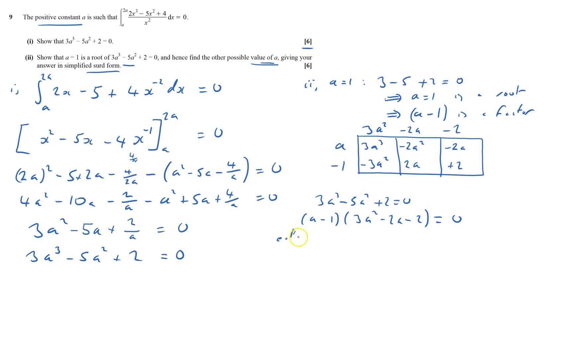So either a minus 1 equals 0, which is a equals 1, we know it already, or 3a squared minus 2a minus 2 equals 0. And that's going to be, I don't like completing the square because I've got 3 in front of it here. I won't factorize, I know that, because it says simplified surd form. So I'm going to put a equals 3, b equals negative 2, c equals negative 2 as well, and therefore a equals minus b, which is 2, plus or minus the square root of b squared. That's negative 2 times negative 2 is 4, minus 4 times a is 3, times c is negative 2.